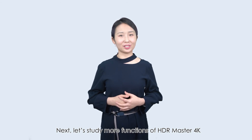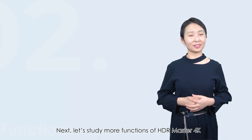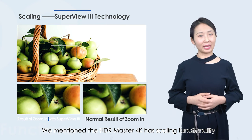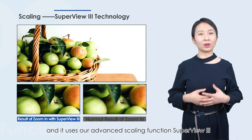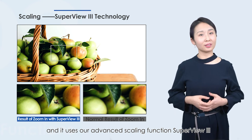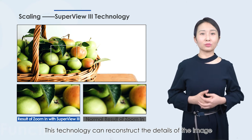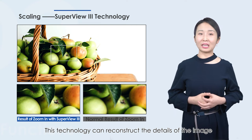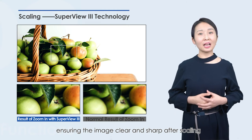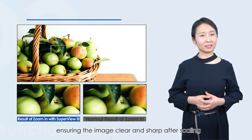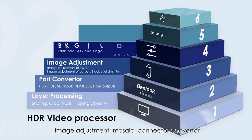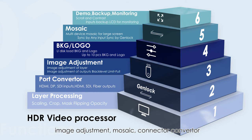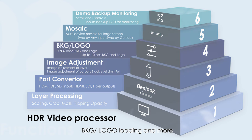Next, let's study more functions of HDR Master 4K. We mentioned the HDR Master 4K has scaling functionality, and it uses our advanced scaling function SuperView 3. This technology can reconstruct the details of the image, ensuring the image remains clear and sharp after scaling. HDR Master 4K also has layer processing, image adjustment, mosaic, connector converter, BKG or logo loading, and more.